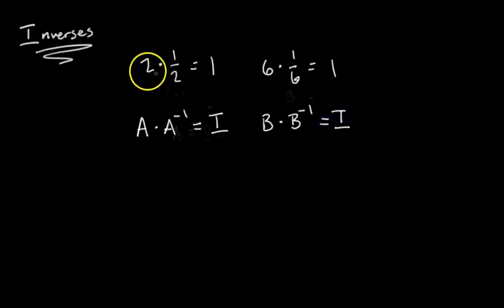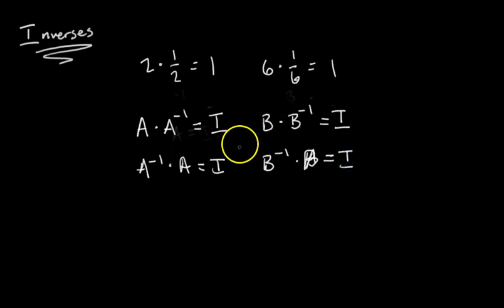I could have swapped these around. I could have said 1 half times 2 equals 1. I could have said 1 sixth times 6 equals 1. Same thing for the matrix universe. I could say A inverse times A equals I, right? For any kind of matrix.